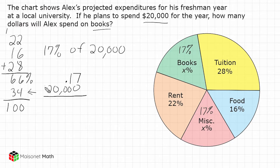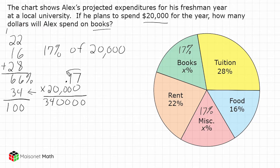I put 20,000 at the bottom because it ends in zeros — specifically four zeros. So all I do is take those four zeros and drop them down. Then I take 2 and multiply it by 17, which is 34. Because there are two place values after the decimal, we go to the end of our answer and move the decimal over two spaces. We end up getting $3,400, which is how much Alex spent on books.